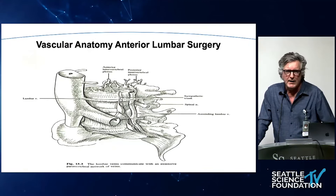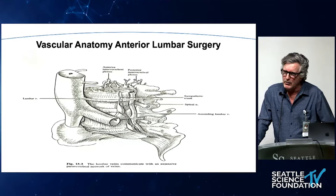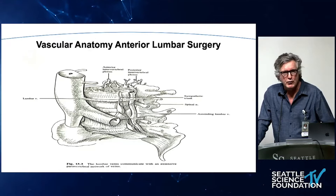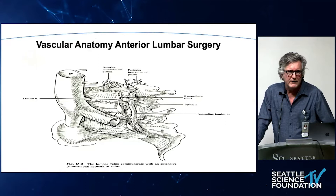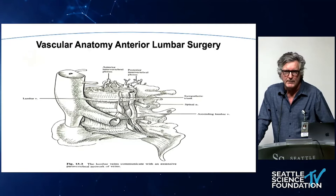A couple of tricks about the iliolumbar vein. Number one, it's frequently multiple. Probably 10 to 15% of patients have two iliolumbar veins. So you've controlled one and then you get more aggressive with retracting the iliac vein, and the next thing you know, you've torn off the second one. So always look for another one.